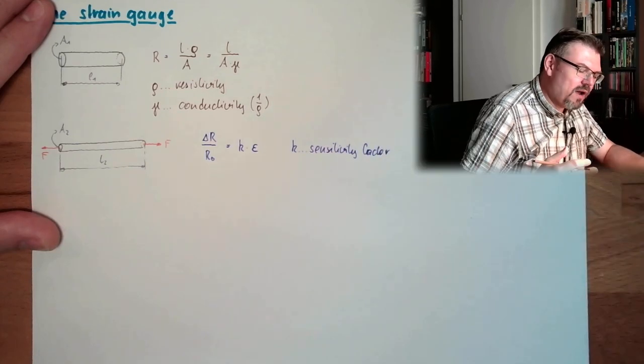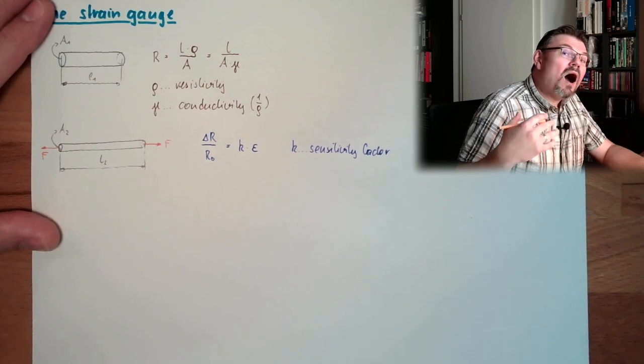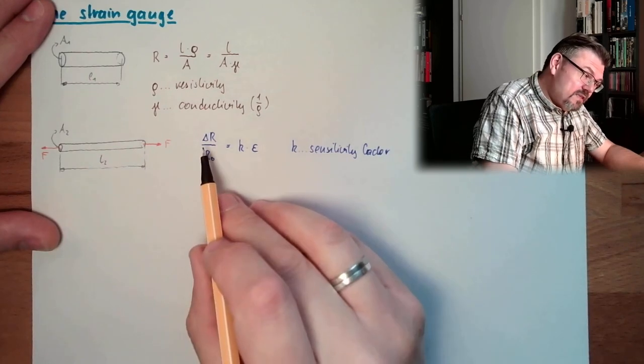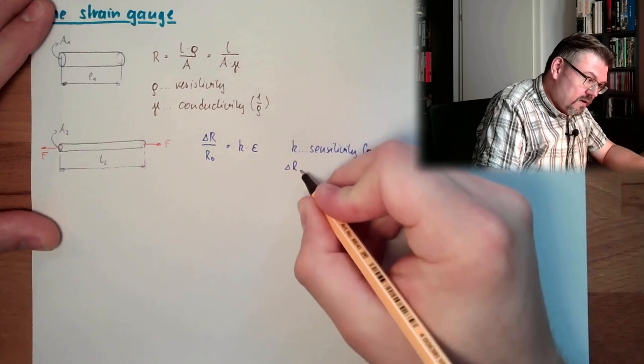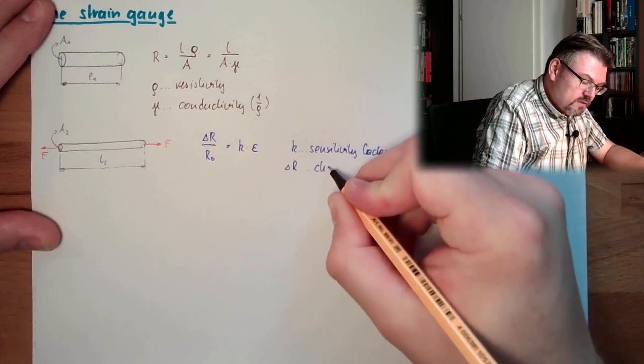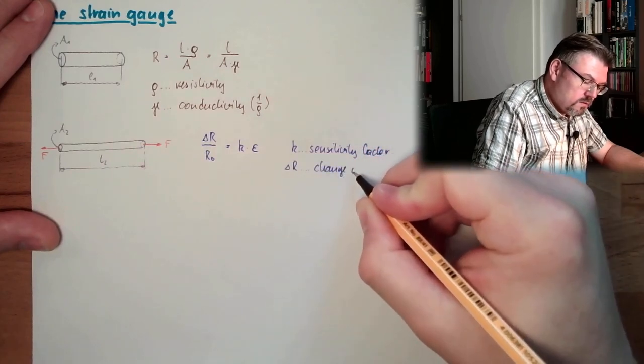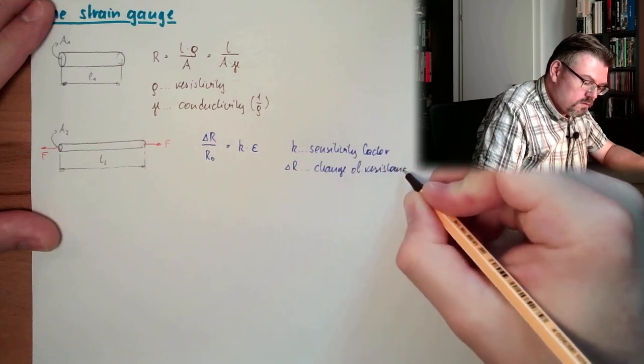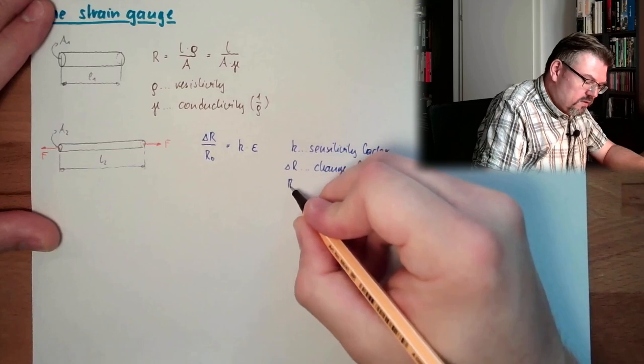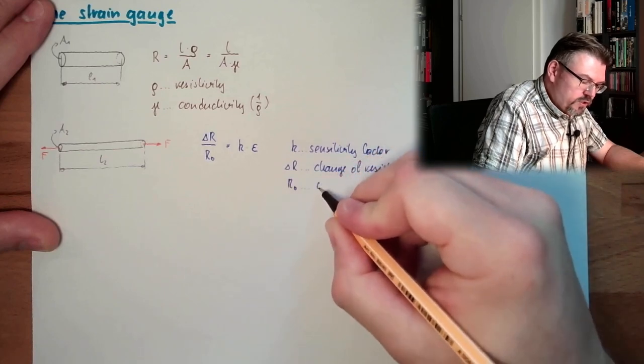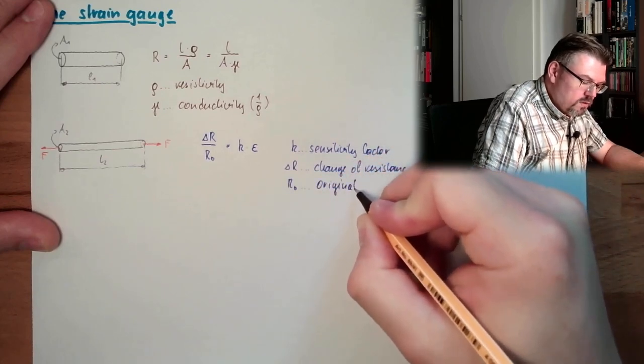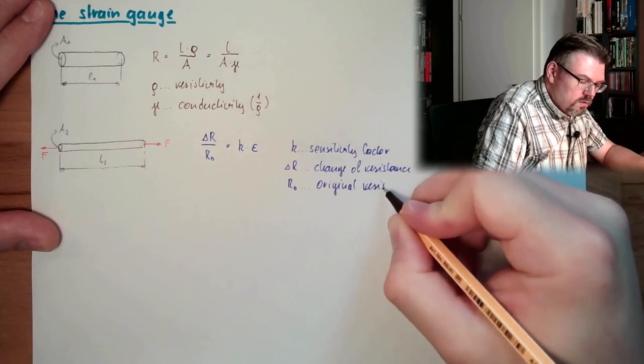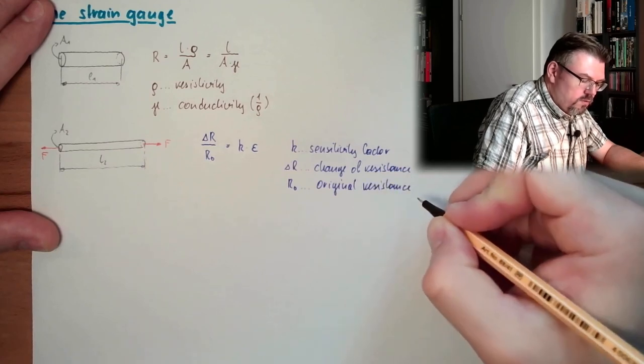This is called sensitivity factor. So this describes how sensitive, how much resistance change. This delta R is the change of resistance.